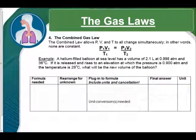And our first example says a helium-filled balloon at sea level has a volume of 2.1 liters at 0.998 atmospheres and 36 degrees Celsius. If it's released and rises to an elevation at which the pressure is 0.900 atmospheres and the temperature is 28 degrees Celsius, what will be the new volume of the balloon?